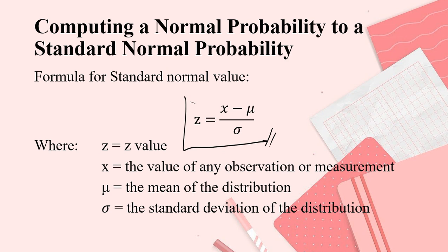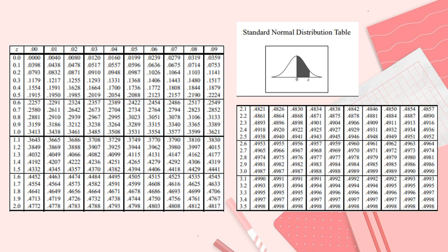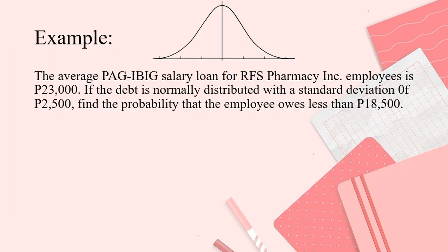So to get the Z value, take note of the formula. You need to solve X minus mean divided by S. So again, we have this table. We will use this throughout the rest of the discussion. So let's have an example.